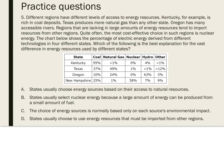Question five: different regions have different levels of access to energy resources. Kentucky is rich in coal deposits, Texas produces more natural gas than any other state, and Oregon has many accessible rivers. Regions lacking large amounts of energy resources tend to import from other regions, and often the most cost-effective choice is nuclear energy. The chart shows the percentage of electric energy derived from different technologies in four different states. Which is the best explanation for the vast difference in energy resources used by different states? Pause and see what you think.